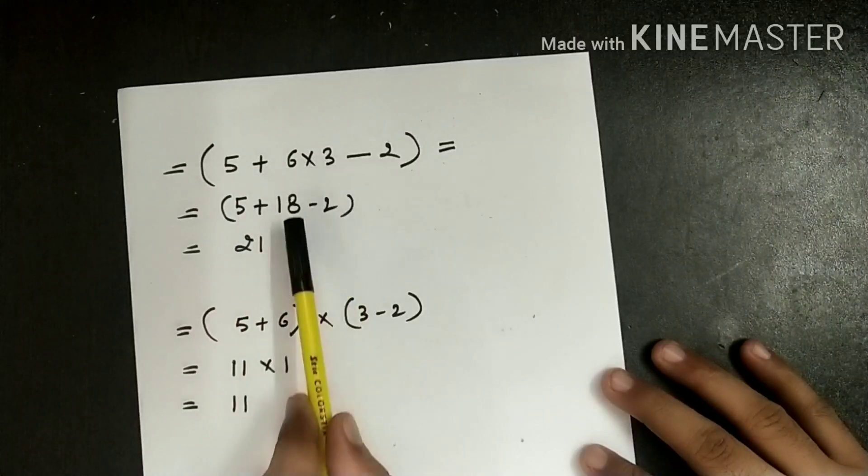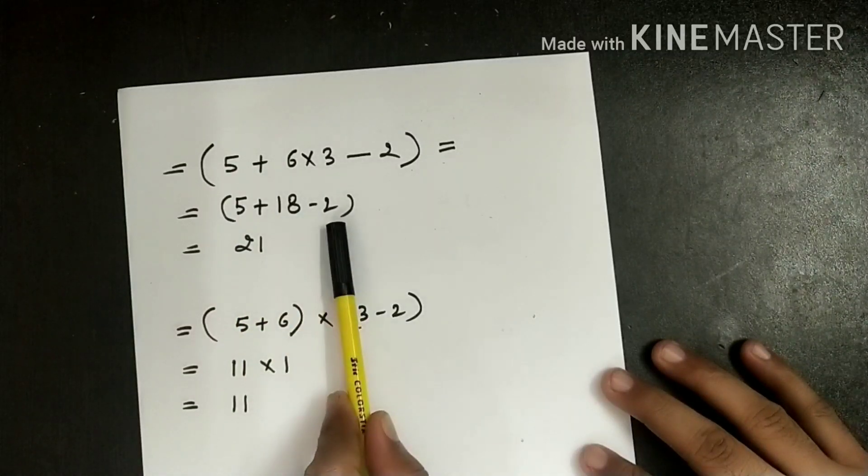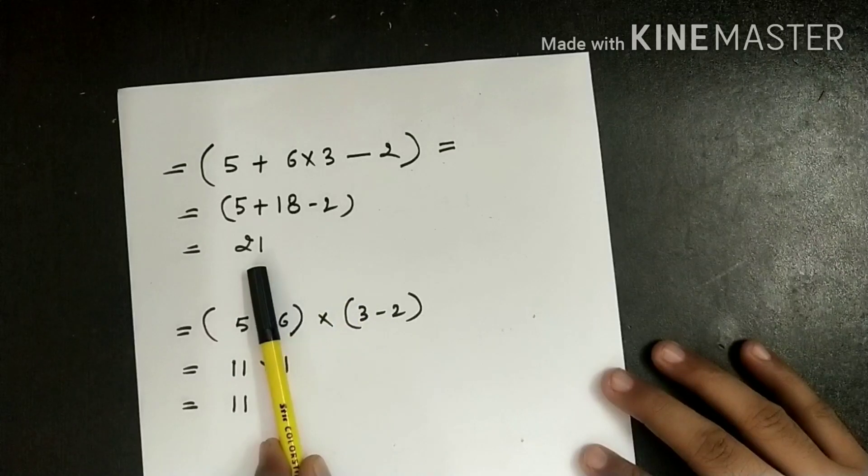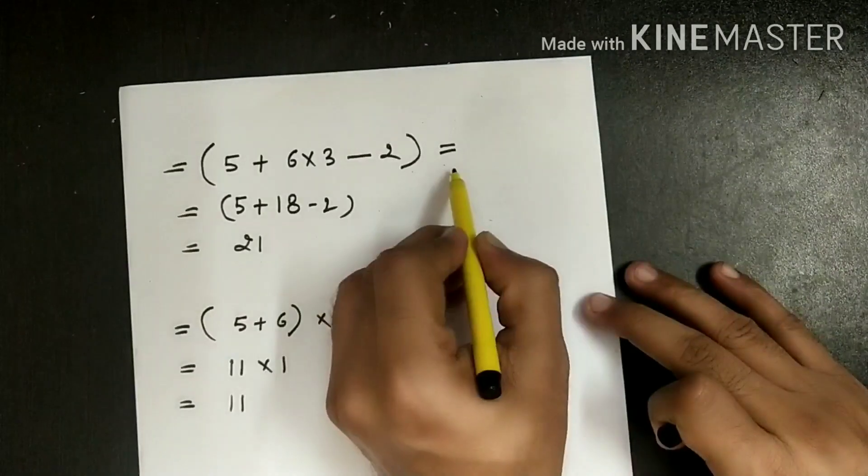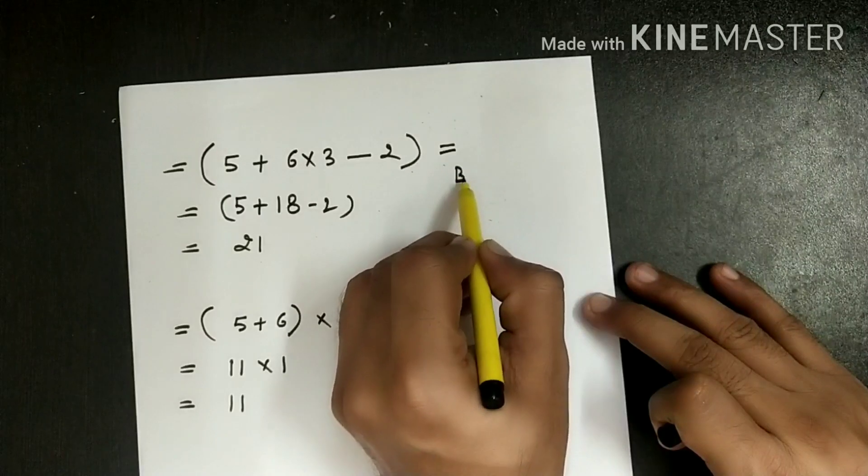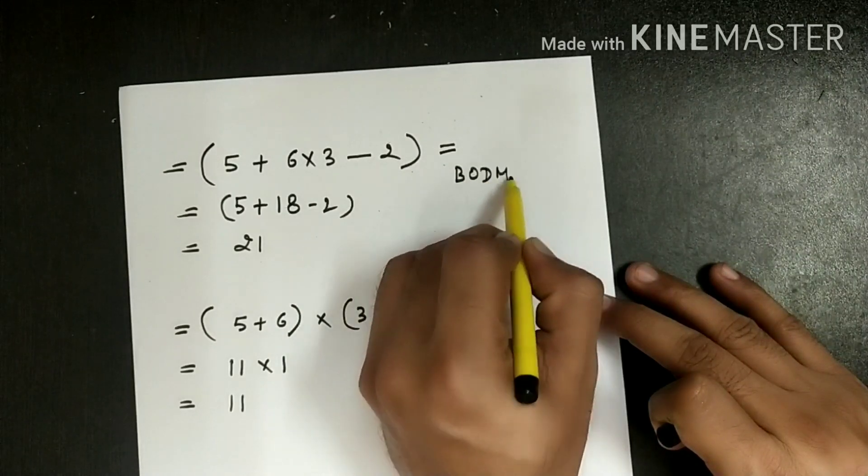6 into 3 is 18, minus 2, and if we solve it we get the answer 21. If you see, the rule of BODMAS is B-O-D-M-A-S.